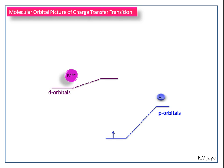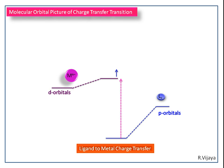We can see the transfer of an electron from the p orbital of the ligand to the d orbital of the central metal ion. This type of transition is known as ligand to metal charge transfer transition. This is also a p to d type transition, which is Laporte-allowed. The spin direction is not changed, so this is a spin-allowed transition. The energy gap between these two molecular orbitals is known as the LMCT energy gap.